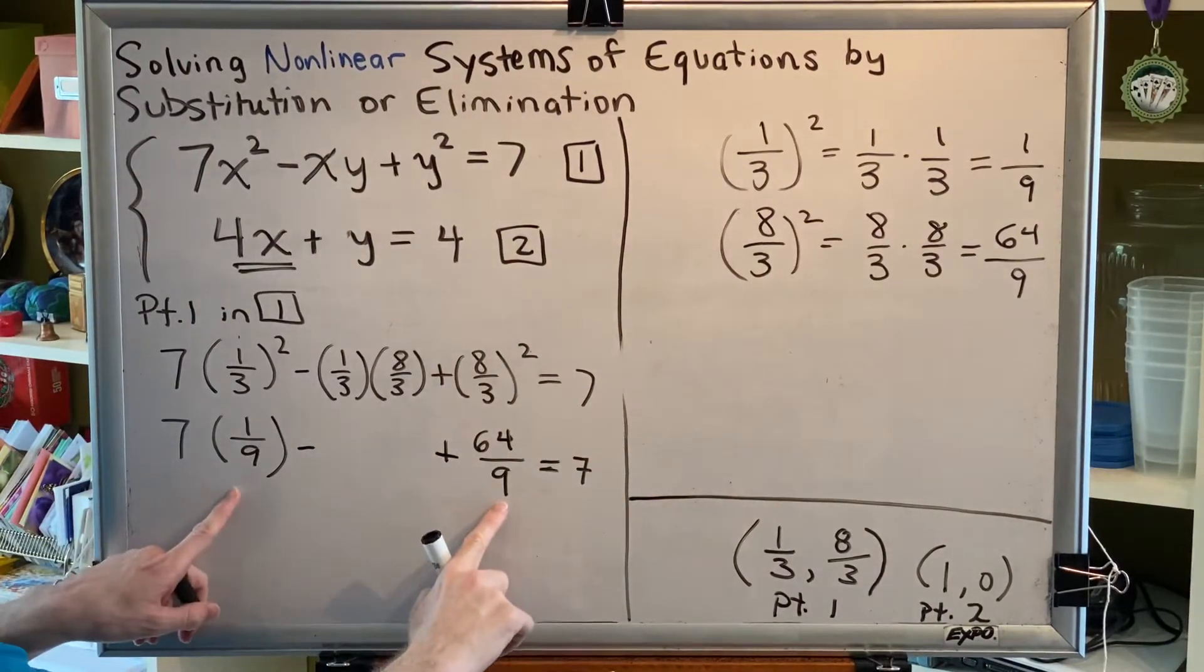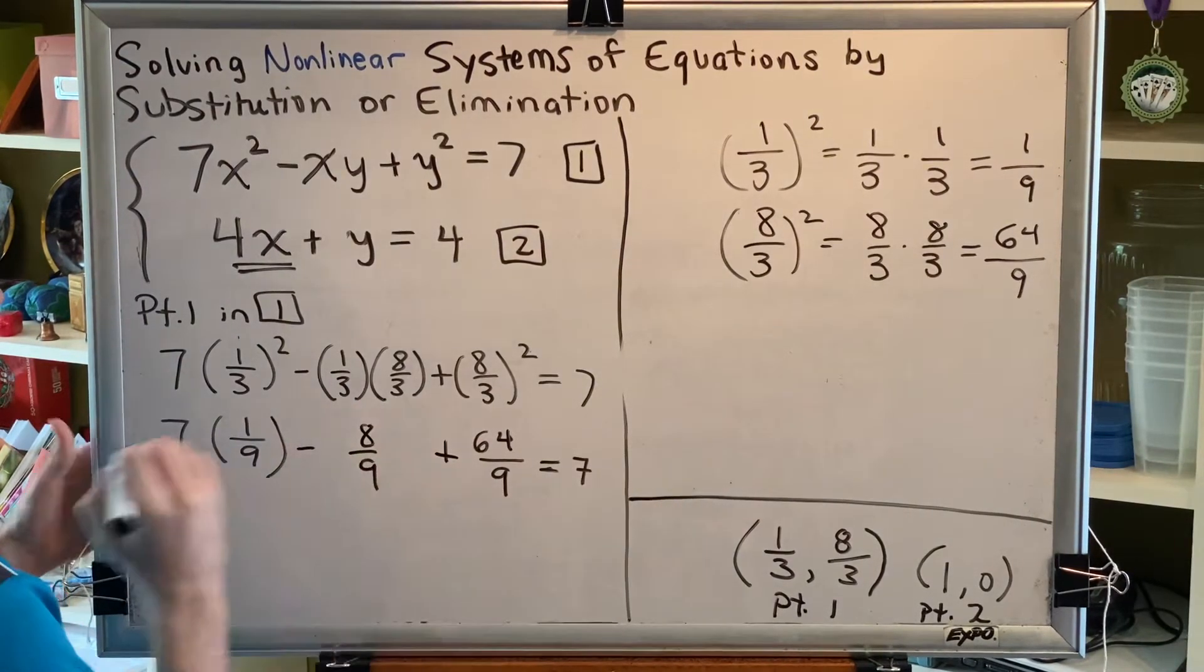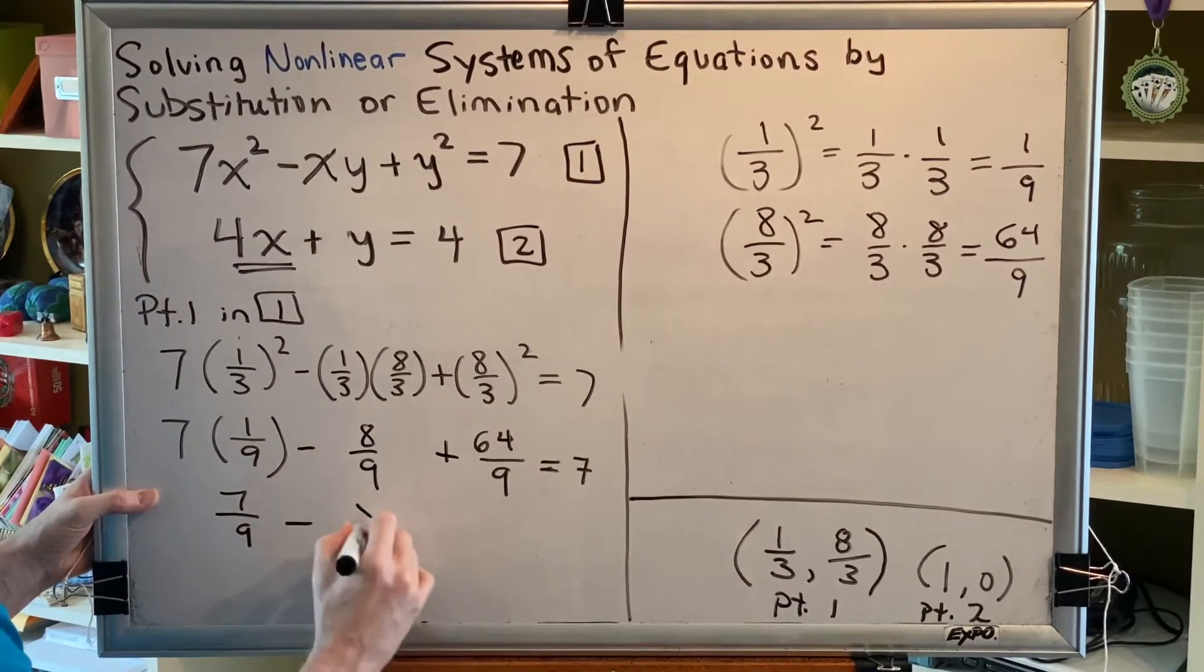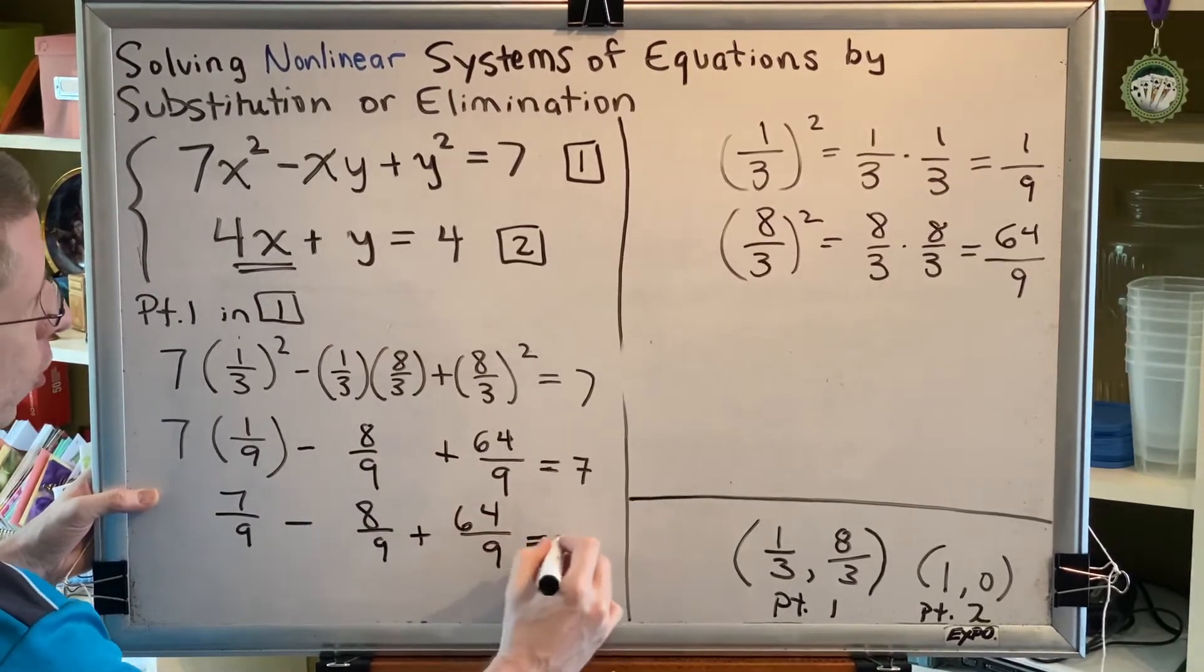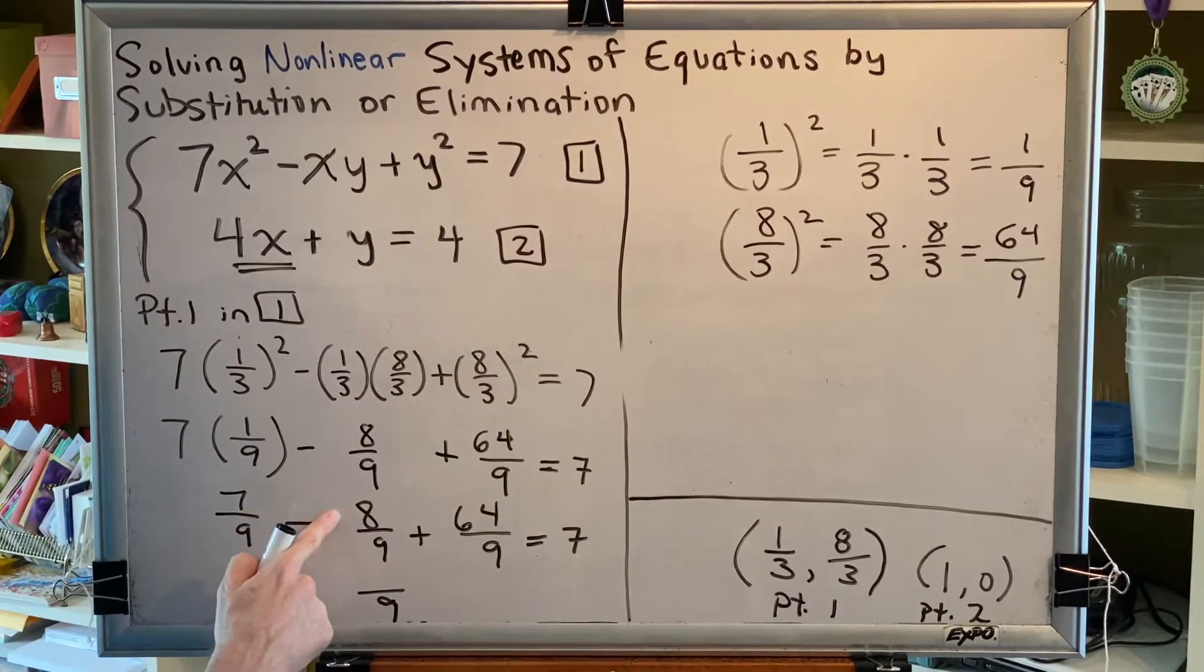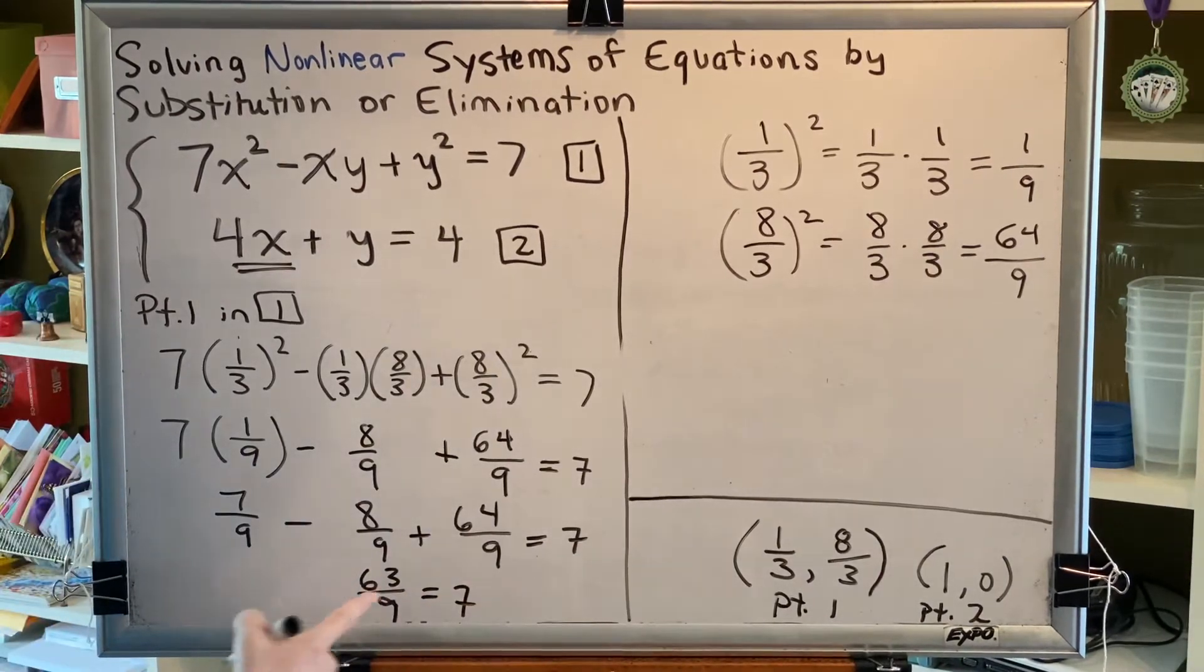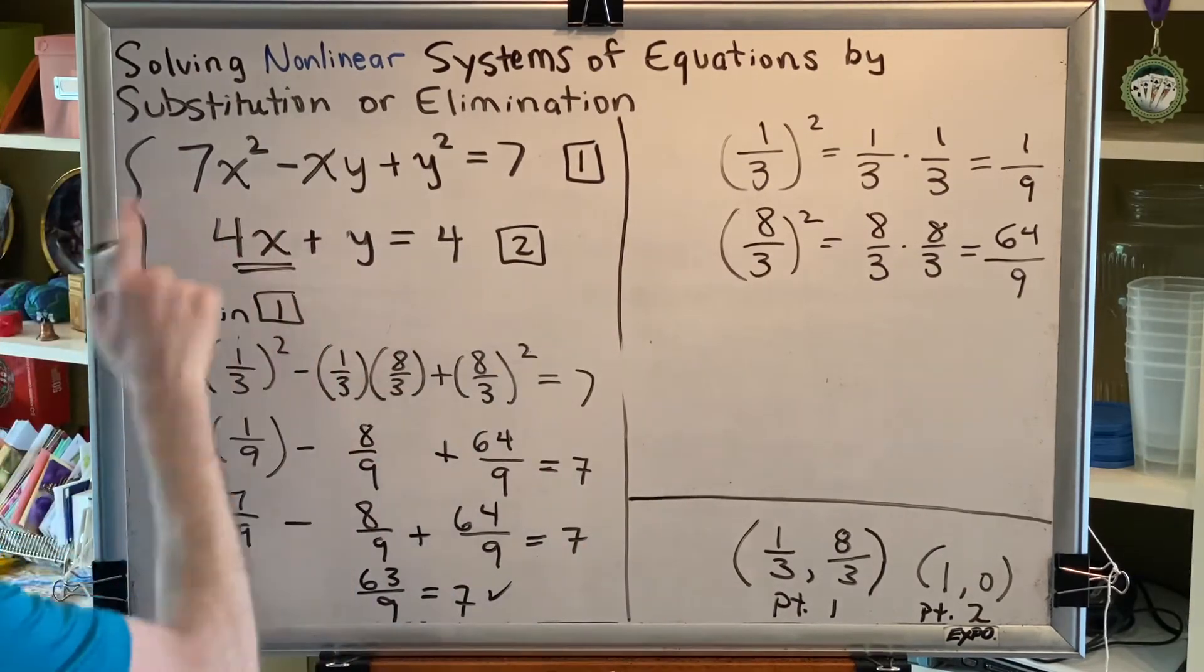And while we're at it, even though we've already done our exponents first, let's go ahead and do this multiplication. One-third times eight-thirds would be eight-ninths. Now seven times one-ninth would be seven-ninths. So we have seven-ninths minus eight-ninths plus sixty-four-ninths. Whenever you add or subtract like fractions, you keep the common denominator and add or subtract the numerators. Seven minus eight is negative one, plus sixty-four would be sixty-three. So on the left we get sixty-three-ninths, and on the right we get seven. Does sixty-three divided by nine equals seven? Yes, it does. And so what that tells me is that point one satisfies equation one.